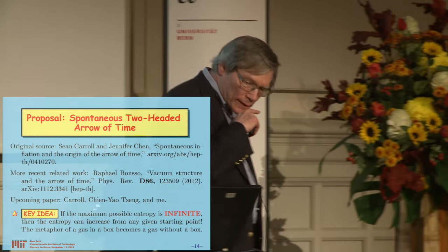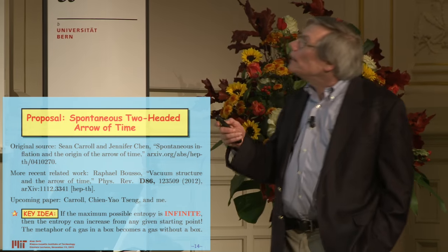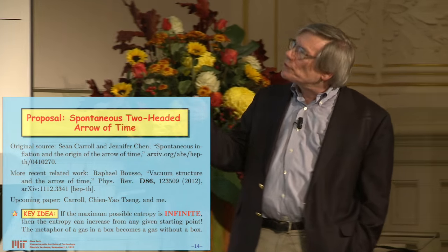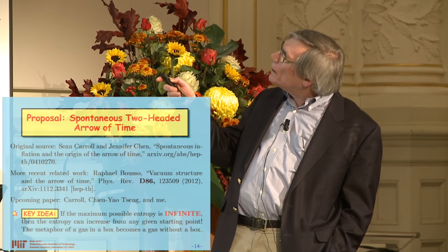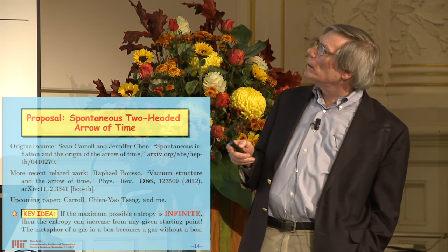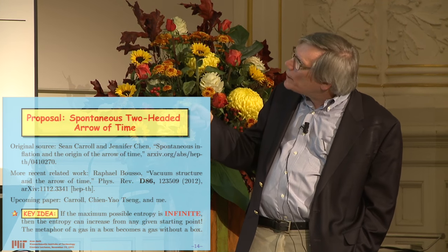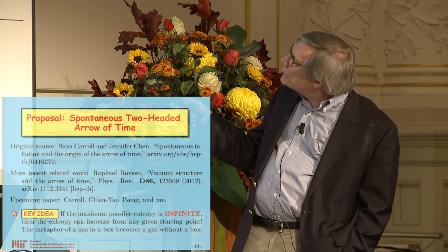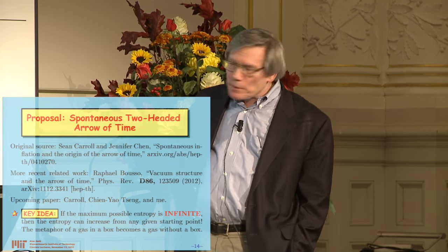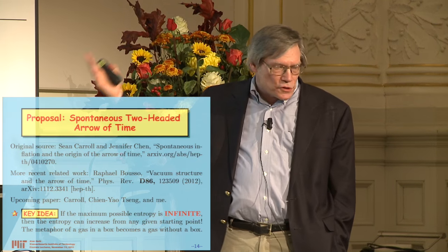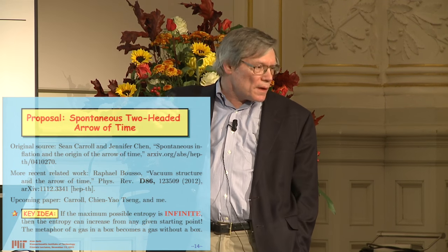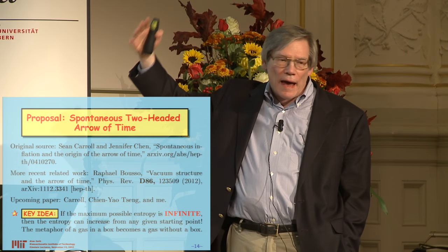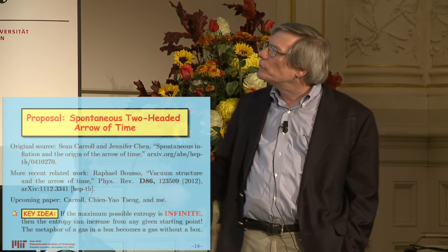Learning that this sentence is false really does open a new window for how the arrow of time question can be answered. The new idea is sometimes called a spontaneous two-headed arrow of time, and it was first described in a paper by Sean Carroll and Jennifer Chen back in 2004. There's also related work — in particular a paper by Raphael Busso from 2012, although I think Raphael's paper is more like a detailed version of Paul Davies' original paper, addressing how inflation preserves an arrow of time rather than how inflation from the very beginning can create an arrow of time.